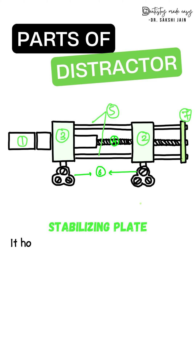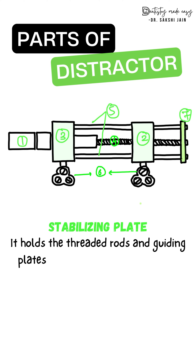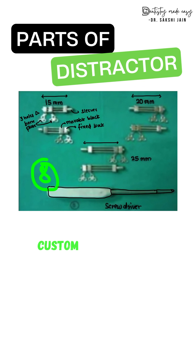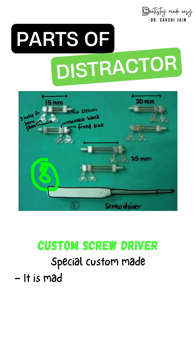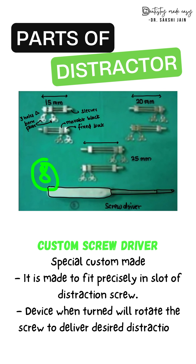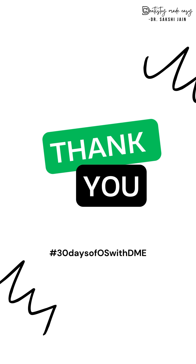The stabilizing plate holds the threaded rods and the supporting plates together at the posterior end of the assembly. The last part is the custom screwdriver. While not strictly a part of the distractor itself, it is important — it is a specially custom-made screwdriver that fits precisely in the slot of the distraction screw and, when turned, rotates the screw to deliver the required distraction.